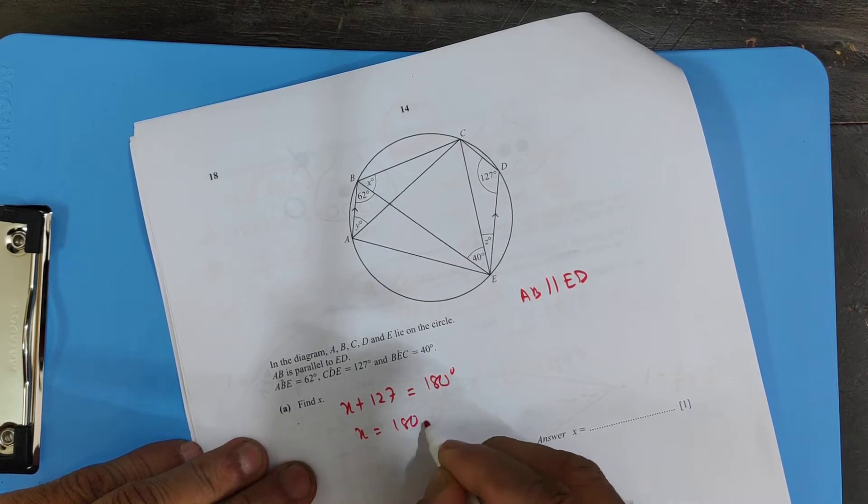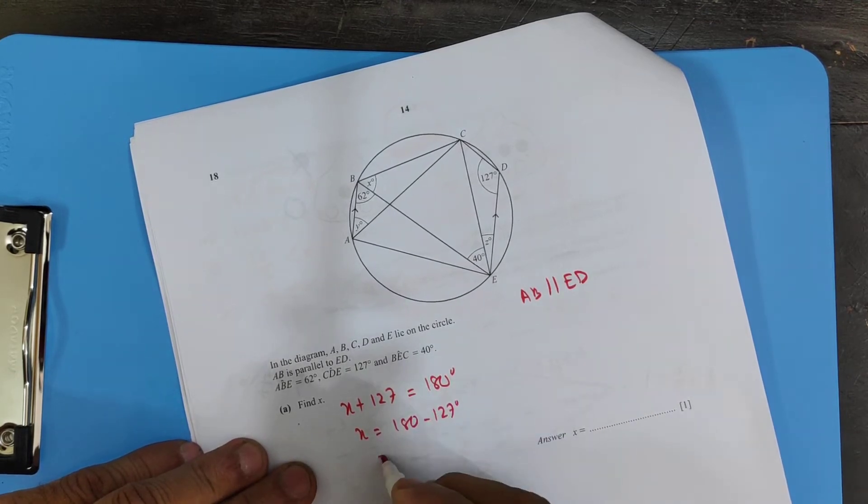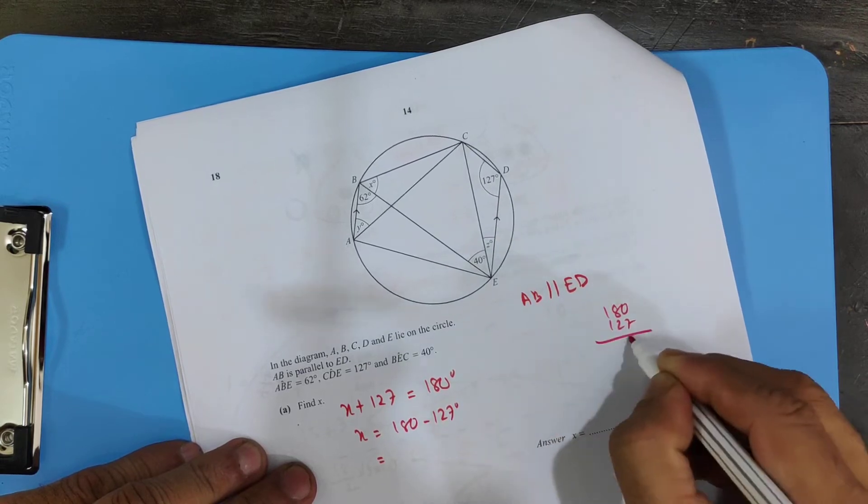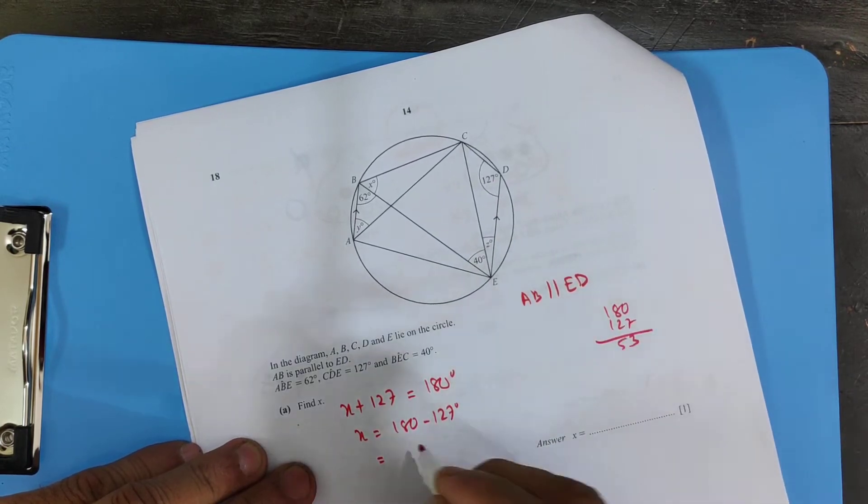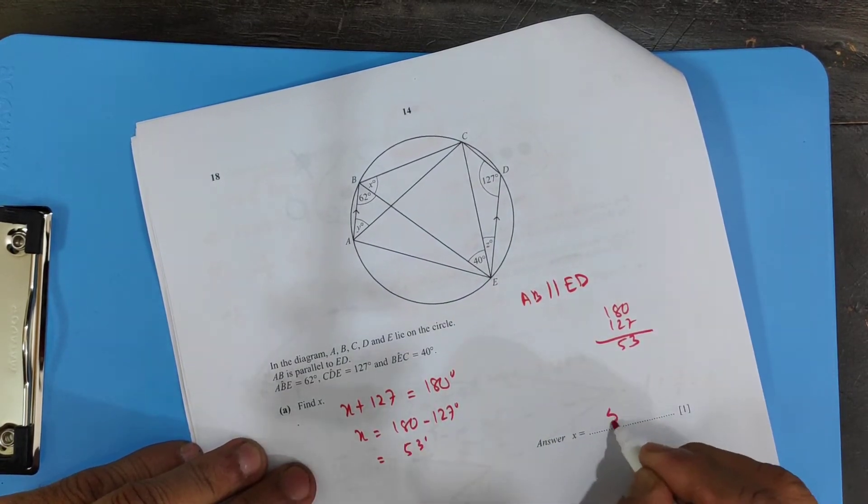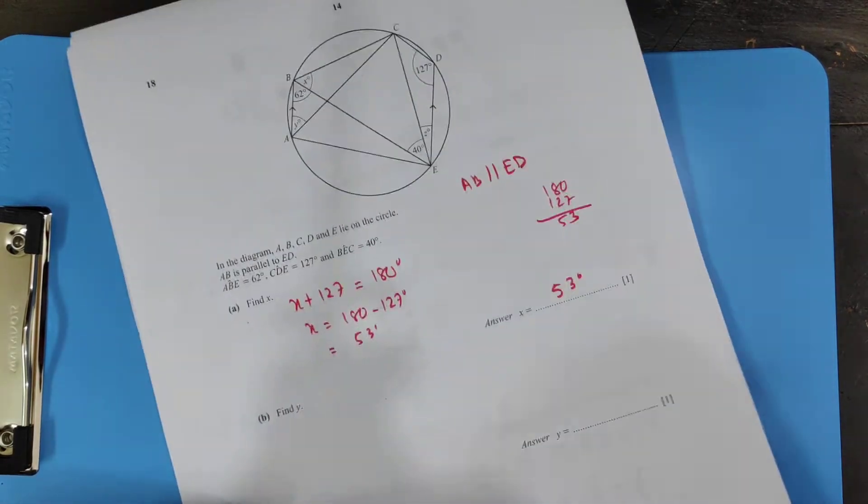That should be 180 minus 127, equals 53. So x supposed to be 53 degrees.